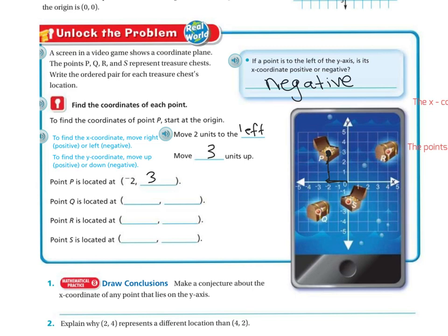Point Q — here's my point Q right there. I'm going to move three units to the left, so that's negative three, and then I'm going to move three units down — negative three. Point R — I'm going to move positive four units to the right and positive three units up, so it's going to be four, three.